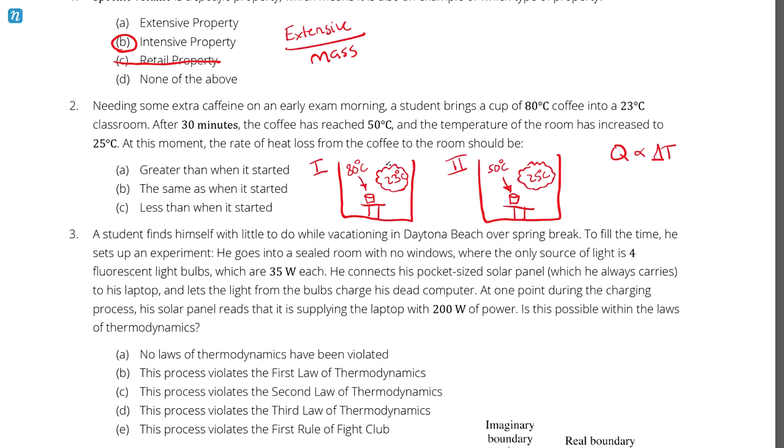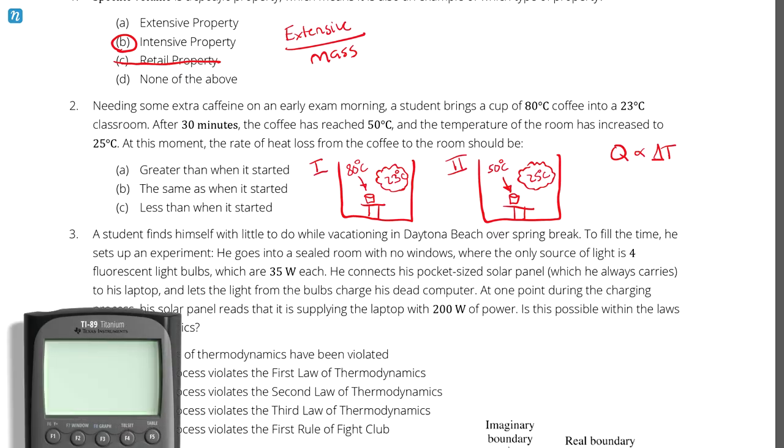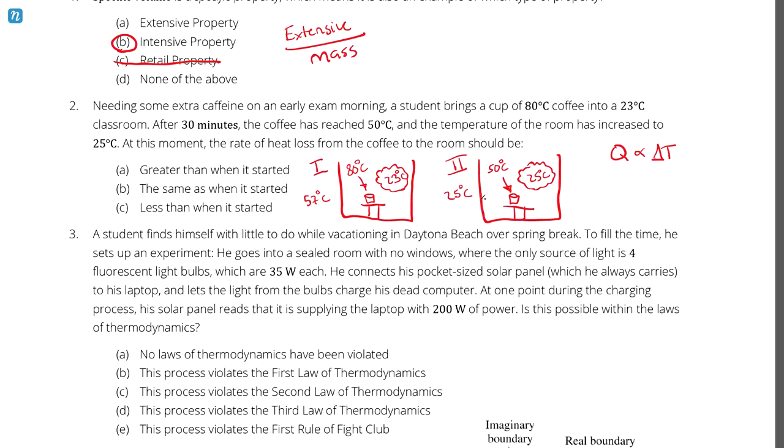So in situation one, we have a temperature difference of 80 minus 23 degrees celsius, which is a temperature difference of 57 degrees celsius. So in situation one, the temperature difference of 57 degrees celsius is driving the heat transfer. And in situation two, that would be 50 minus 25, which on most days is 25. So in situation two, we have a temperature difference of 25 degrees celsius driving the heat transfer between the coffee and the air. So in situation two, the temperature difference is lower, therefore the heat transfer is lower. So the rate of heat transfer is going to be less than when it started.